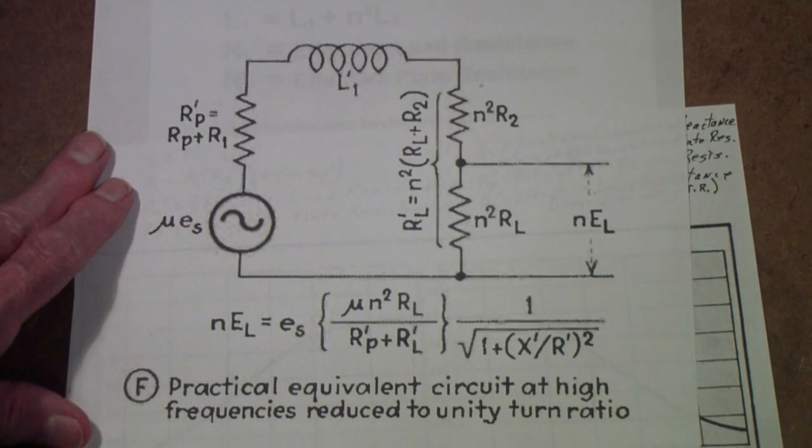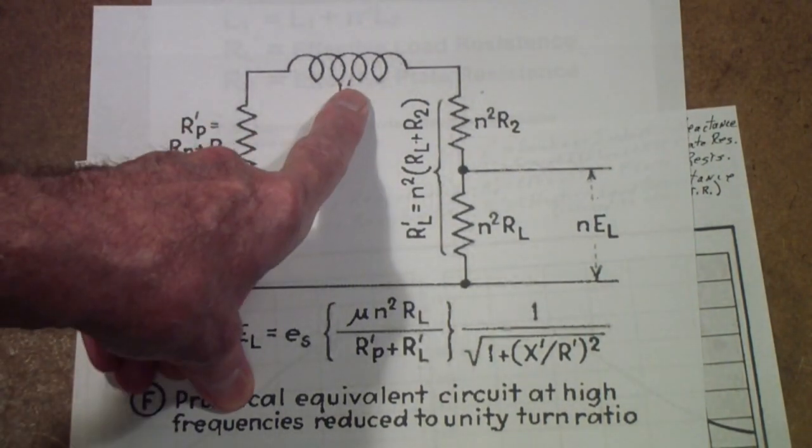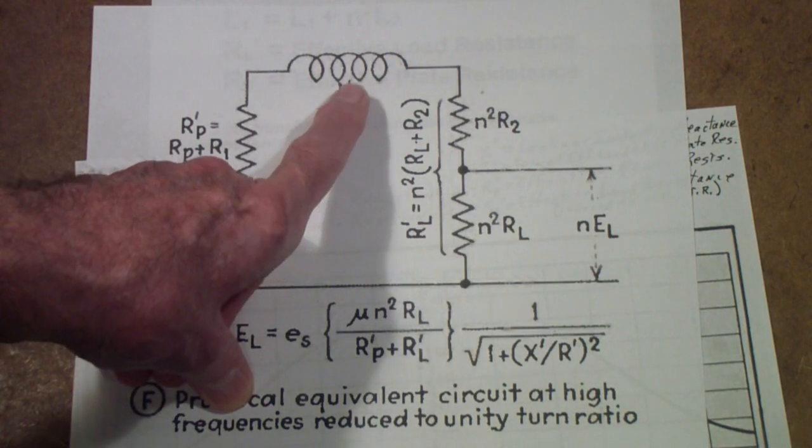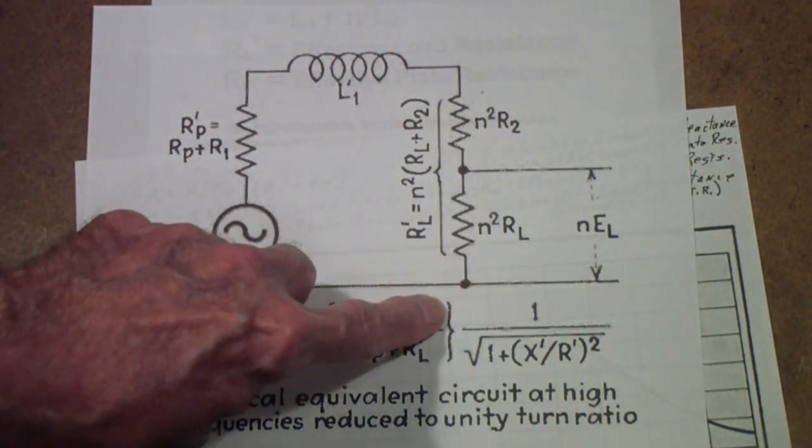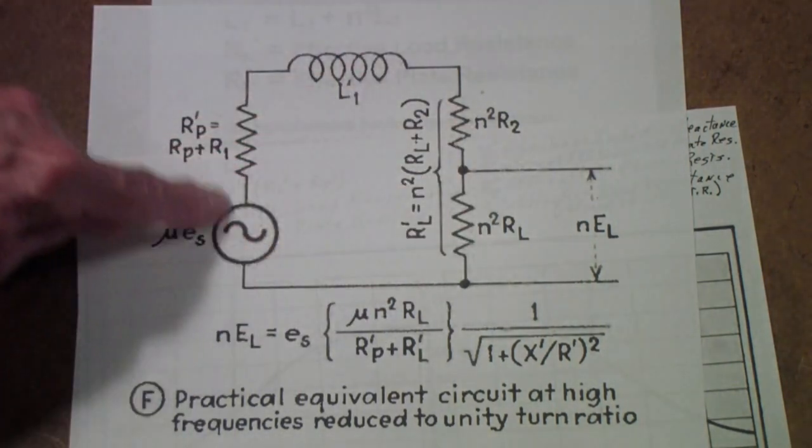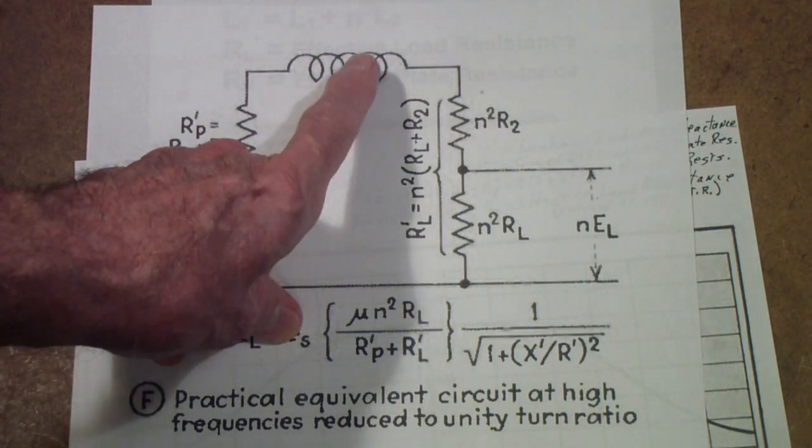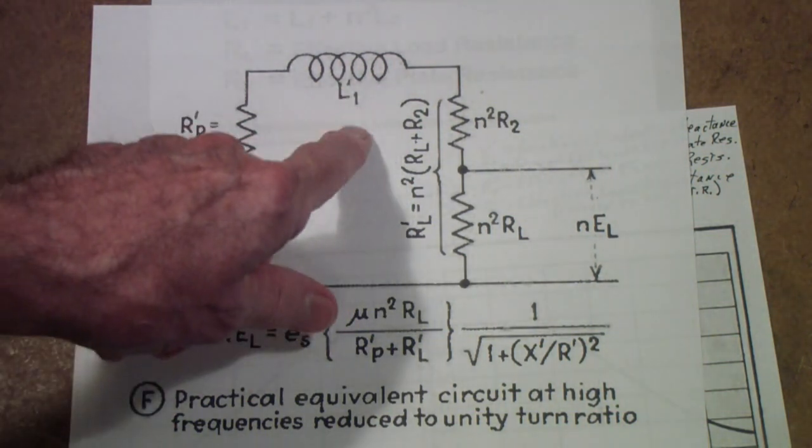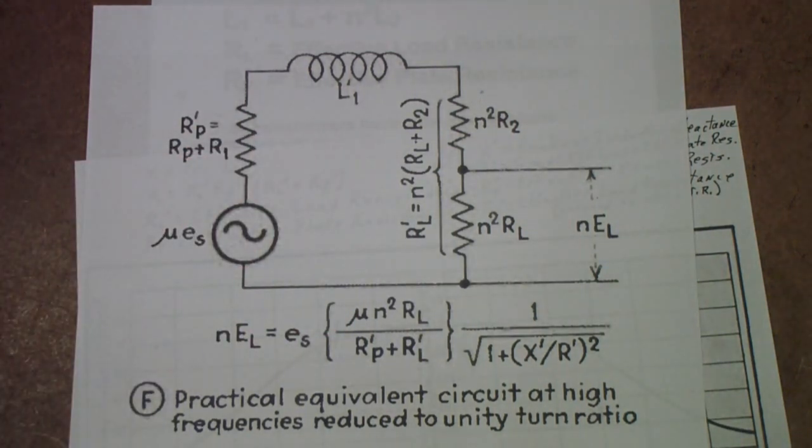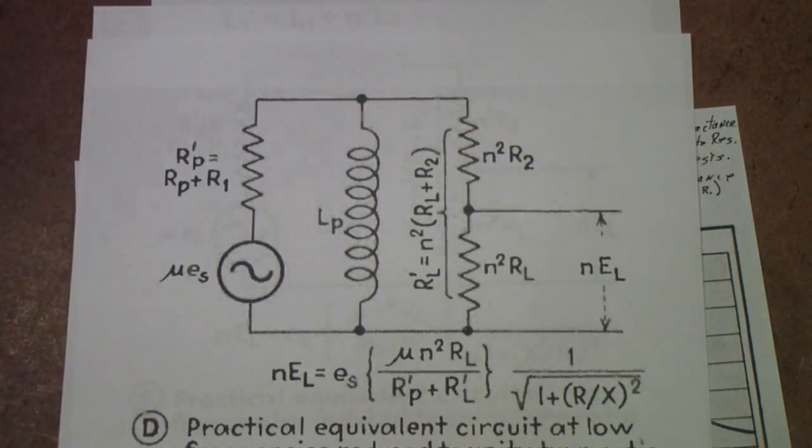At high frequencies, this is the equivalent circuit. Notice now that at high frequencies, the effective leakage inductance is in series with this. This is just a simple series circuit. But you have to account for this, and remember that the impedance of an inductor changes with frequency. So, just in this one at high frequencies, and this at low frequencies.